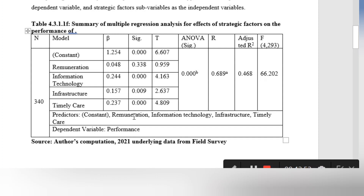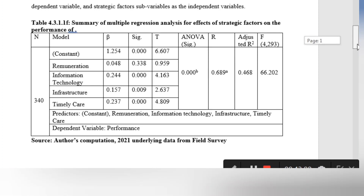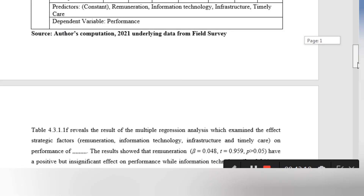These are the predictors, which are your independent variables — constant, remuneration, information technology, infrastructure, timely care — then your dependent variable, which is performance. This is just a summary of the entire table for all the tables that have been brought up.